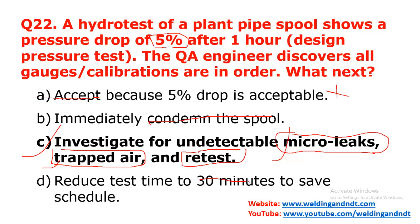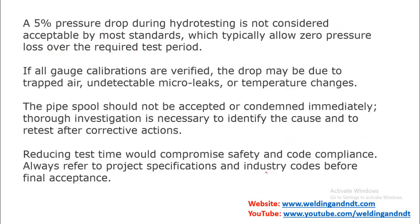Option D — reduce test time to 30 minutes — is not correct. You have to go as per your procedure. If your procedure says one hour, you should stay for one hour. Reducing the time to 30 minutes just to save the schedule, or to show there is no pressure drop within that time, is wrong. Hence this answer is also not correct.